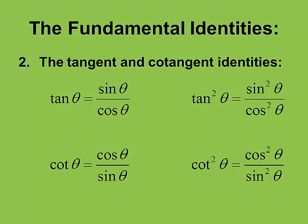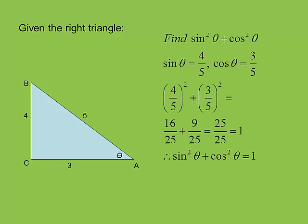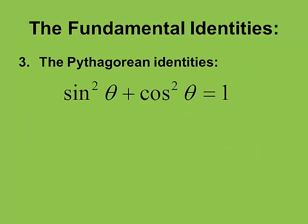Moving on to the third and final point of the fundamental identities: the Pythagorean identities. We go back to our 3, 4, 5 triangle with theta across from 4. We want to find sine squared plus cosine squared. We square 4/5 to get 16/25, and square 3/5 to get 9/25. That comes out to 25/25, which is 1. That is our basic Pythagorean identity: sine squared plus cosine squared equals 1. That is really the basis of trigonometry.